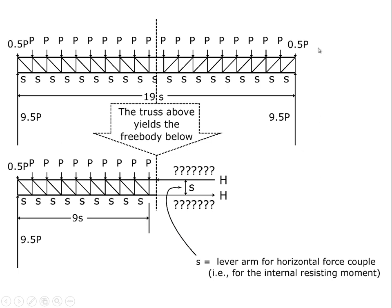We know that the overall truss needs to be in equilibrium to provide a satisfactory structure. We'd really like to understand what's going on internally, though, because we know that internal stresses are what are going to fail this truss. Right now, our rules are that equilibrium applies to all the external forces — as long as we take the truss as a whole, we can't understand anything about what's going on internal to it. We can simply calculate external reactions.